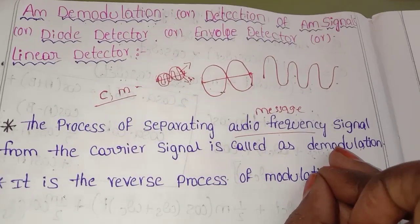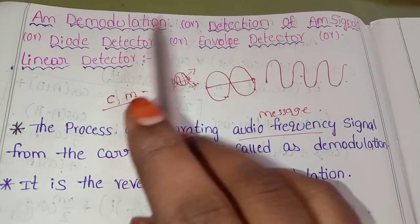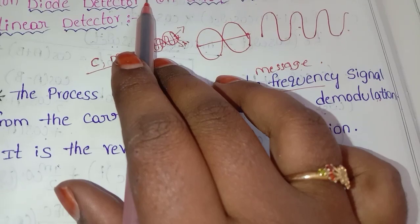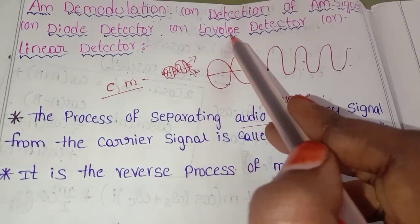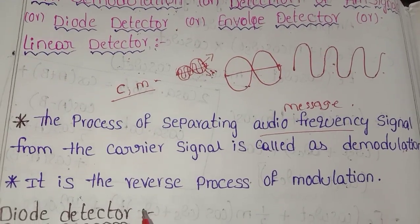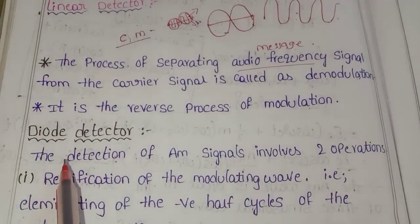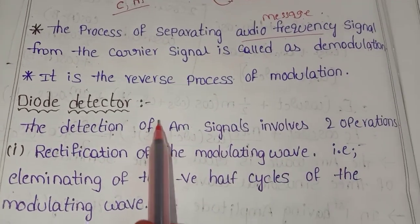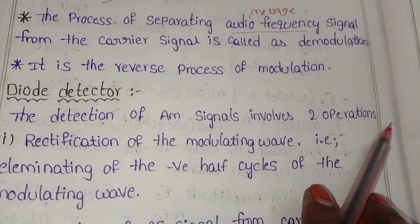If you want to perform demodulation, you can use the carrier signal. This can be done using an Envelope Detector or Diode Detector. The Diode Detector is also known as the Envelope Detector. The detection of AM signals involves two operations.